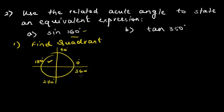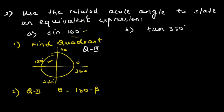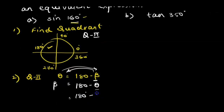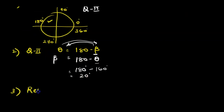Second step is to apply the relationship between theta and beta. Since we are in the second quadrant, we use: theta = 180 minus beta. We are looking for the related acute angle beta, so we isolate beta: beta = 180 minus theta. Theta is 160 degrees, therefore beta = 180 minus 160 = 20 degrees.